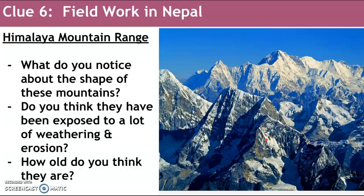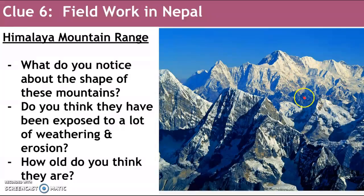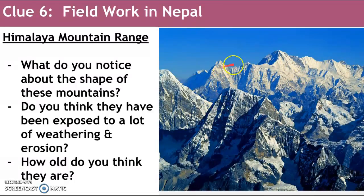When we look at these mountain ranges, what do you notice? What do they look like — are they rounded or jagged? Do you think they've been exposed to much weathering and erosion? How old do you think they are — relatively young or relatively old compared to other mountain ranges?